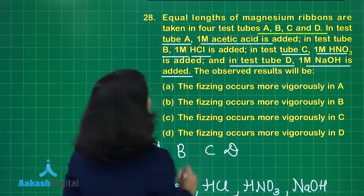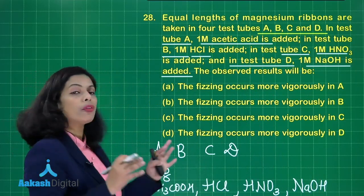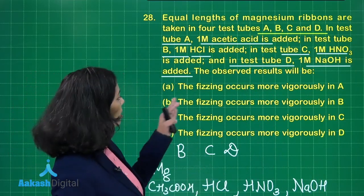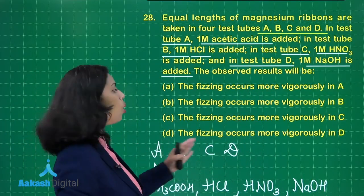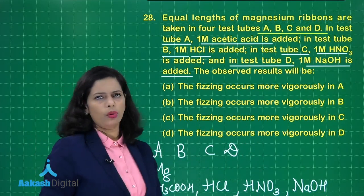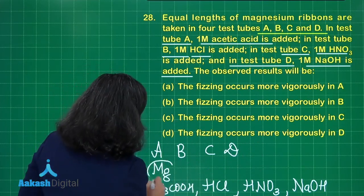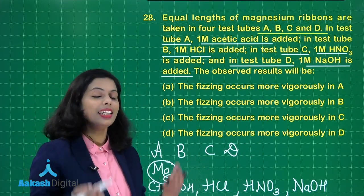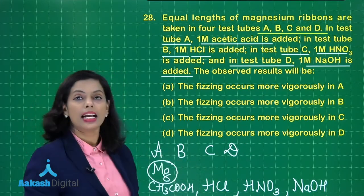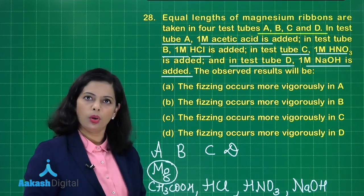The observations are: the fizzing occurs more vigorously in A, the fizzing occurs more vigorously in B, fizzing occurs more vigorously in C or in D. That you need to find out. So just look at magnesium. This is a reactive metal. If you know about the reactivity series, definitely you can say it is able to react with acids to produce hydrogen.